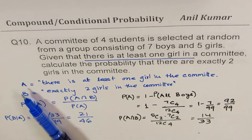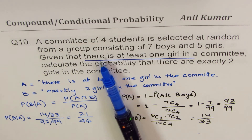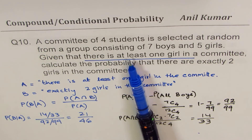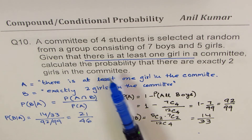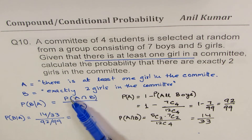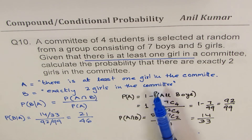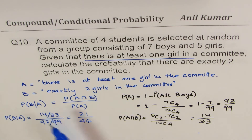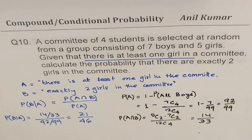We defined event A from the given question as the event that there is at least one girl, and B as exactly two girls in the committee. Then using the conditional probability formula, we got our answer. I hope the steps are absolutely clear. Feel free to write your comments and share your views.